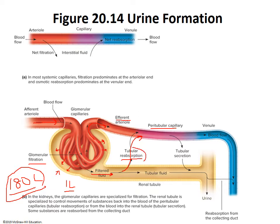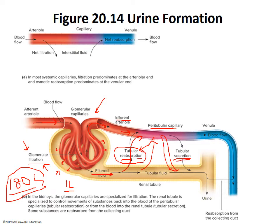As the filtrate enters the tubule, some things get pulled back into the circulatory system — that's tubular reabsorption. Other things in the peritubular capillary bed that didn't get filtered during glomerular filtration need to be removed, so they get pushed into the tubule — that's tubular secretion. So: glomerular filtration produces filtrate; tubular reabsorption pulls some back; tubular secretion pushes more in from the capillary.